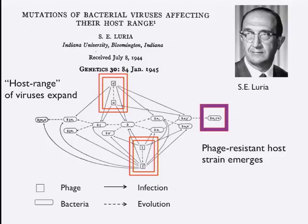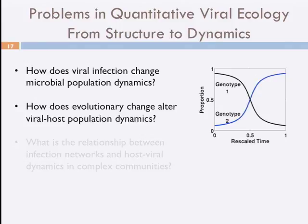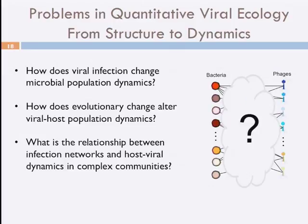So I want to, in the course of this seminar, tell you about other ways in which viruses and bacteria interact, and how the interaction at cellular scales affects ecology and evolution together. I will try to do that in three stages: first, asking how does viral infection change host population dynamics — microbial population dynamics; second, how does evolutionary change alter this relationship; and third, going toward natural environments by asking what is the relationship between infection networks, coexistence, and natural dynamics.